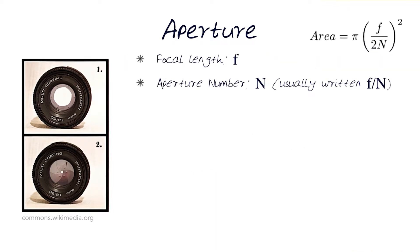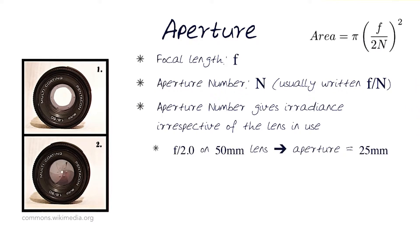The focal length f and aperture number are known. Now, one of the interesting things to note is aperture number gives the irradiance of what's hitting the sensor irrespective of the lens being used. Because it's the f that's dependent on the lens, N is the size of the aperture.